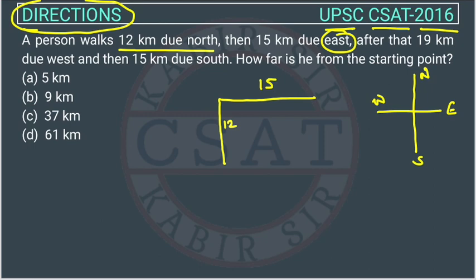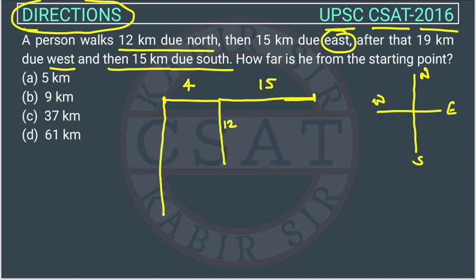After that, 19 kilometers due west. After reaching here, he goes west. How many kilometers? 19. So 15 is this much, and then 4 — total is 19. So he is reaching here. And then he goes 15 kilometers due south. South is here, so he is going in the south direction, 15 kilometers, and he reached here.